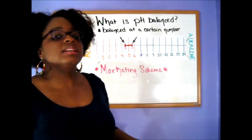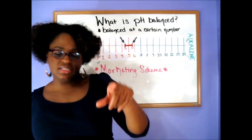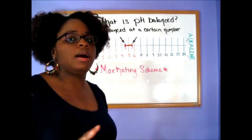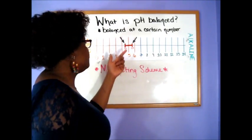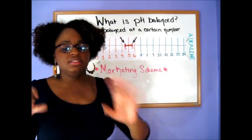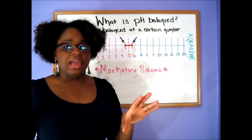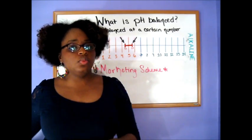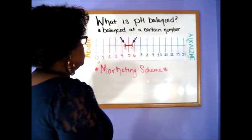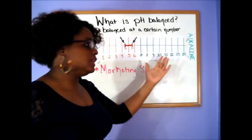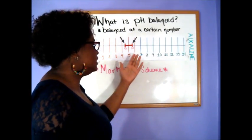Remember in the other video I did, the 4.5 to 5.5 range is the range that you want your hair to be at. Basically, that definition was saying that your products can have a pH balance even at 8, 9, 10.